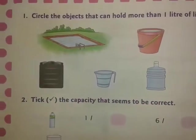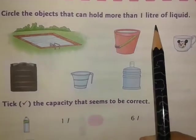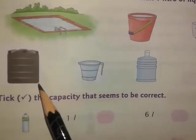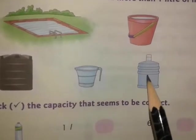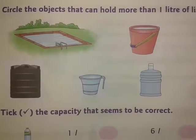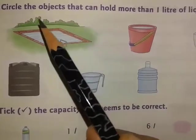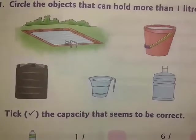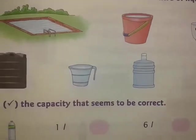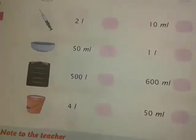The first one I will explain a little bit: circle the object that can hold more than one liter of liquid. Pictures given are a swimming pool, a bucket, a cup, a water tank, a mug, and a gallon of water. The objects you think will hold more than one liter you will circle - like a swimming pool, you know it holds a huge quantity of water. Try to do this yourself; tomorrow I will send the answer PDF.